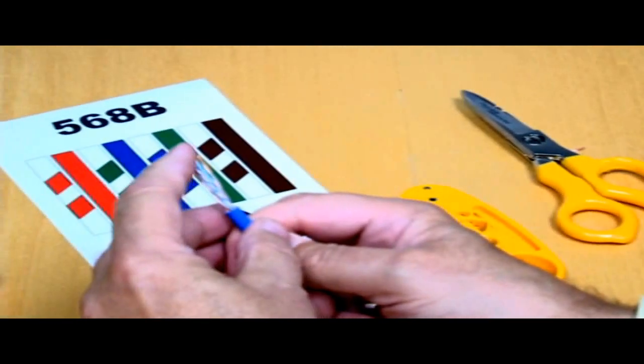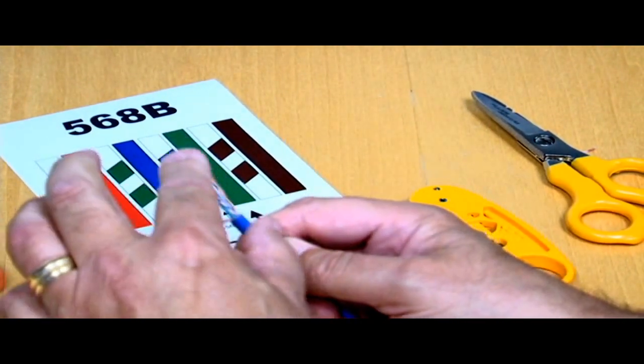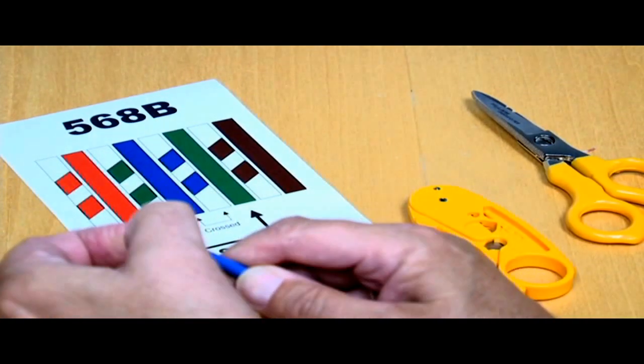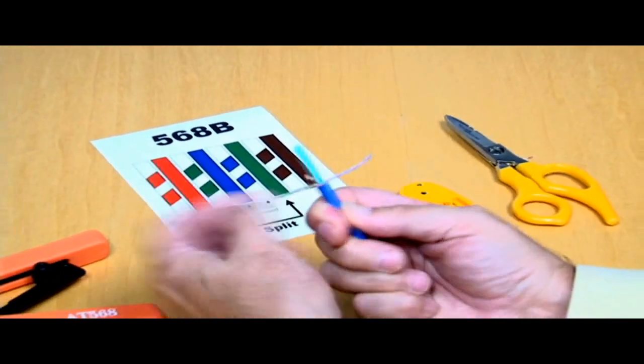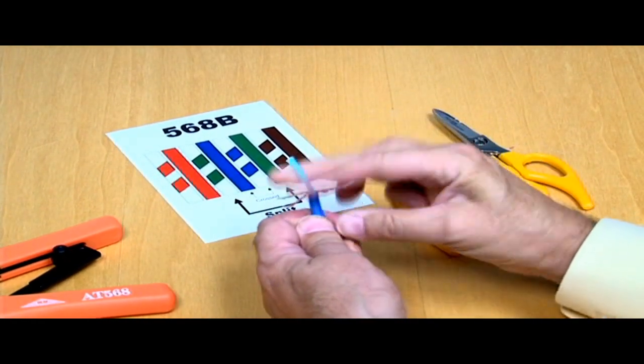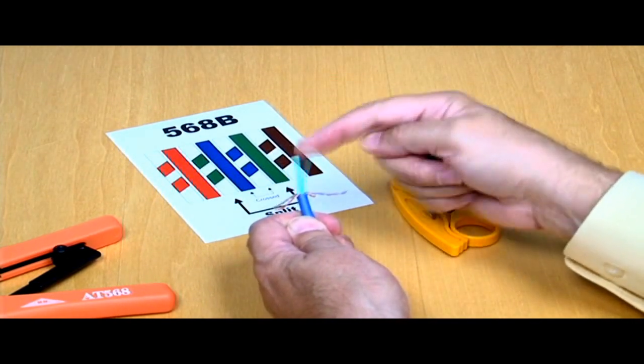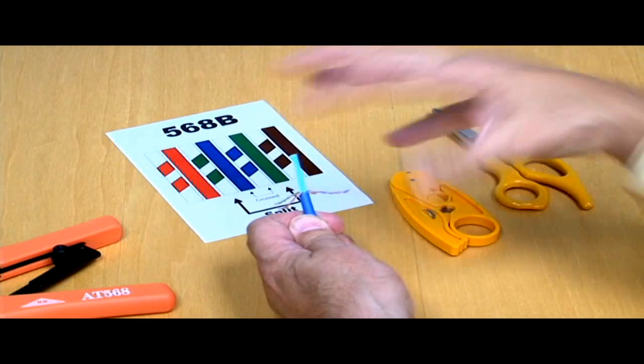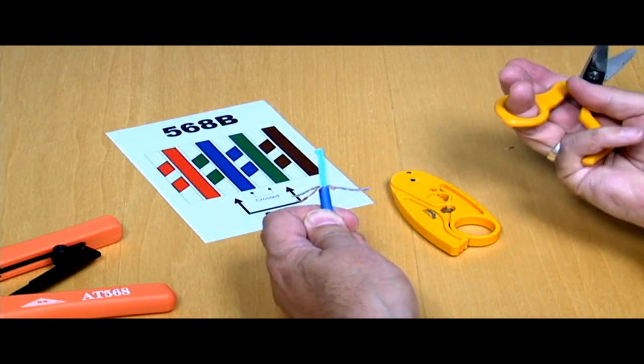The next thing we're going to do is separate the pairs. So we're going to pull these pairs apart. And you'll notice that inside many Category 6 cables, this Category 6 cable which happens to be Category 6 plenum, in the middle of here is a spine. That spine is there in order to hold the cable geometry together so it can maintain its electrical performance.